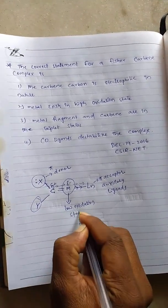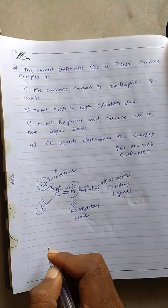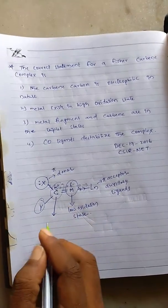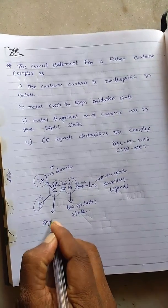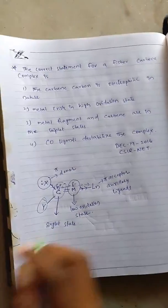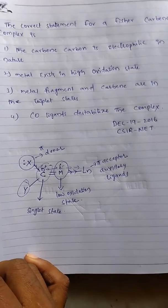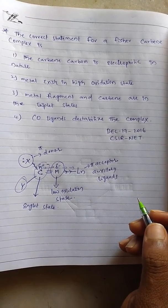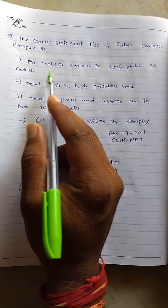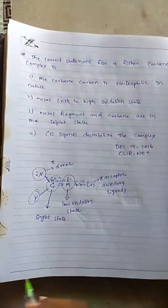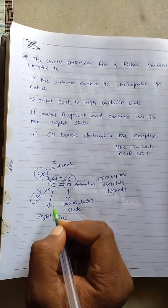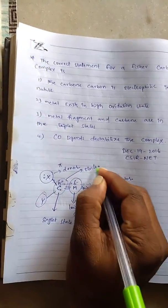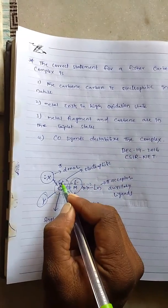In Fisher-Carbine, the carbon is in singlet state. From this data we can find out the answer. The carbine carbon is electrophilic in nature. Yes, here the carbine carbon in singlet state is electrophilic because it is having partially positive charge. That means it is the right answer.